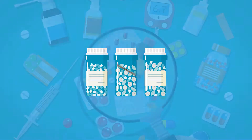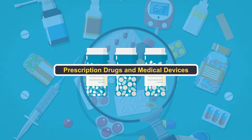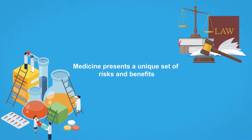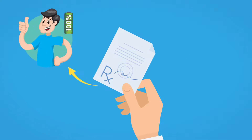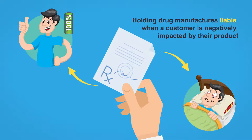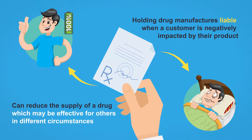One special area of design defects law is liability for defective prescription drugs and medical devices. The law recognizes that the area of medicine presents a unique set of risks and benefits. In medicine, what may be helpful for some can be harmful for others. Holding drug manufacturers liable when a customer is negatively impacted by their product can reduce the supply of a drug which may be effective for others in different circumstances. For this reason, the standard of establishing liability in these cases is different than for non-medical products.